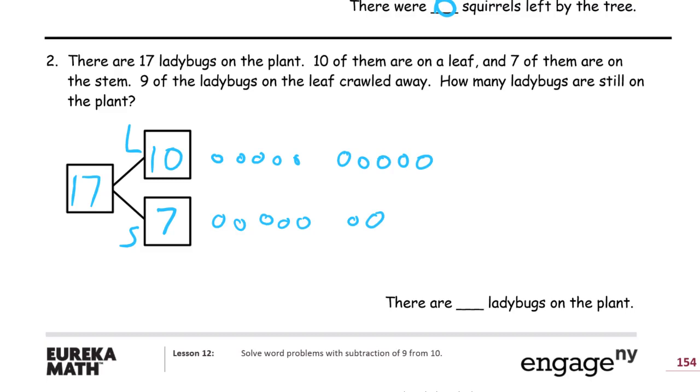Nine of the ladybugs on the leaf crawled away. So we know there's going to be just one left when we take nine away from ten. Can't take nine away from seven because seven's not big enough. So how many are left on the plant? There's one, two, three - there's this seven and one more. Eight.